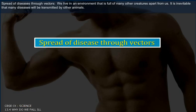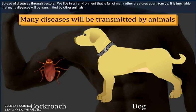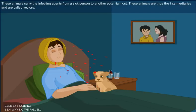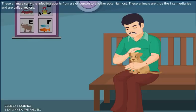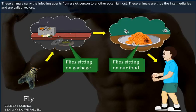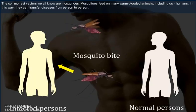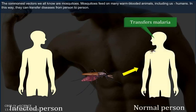Spread of disease through vectors: We live in an environment that is full of many other creatures apart from us. It is inevitable that many diseases will be transmitted by other animals. These animals carry the infecting agents from a sick person to another potential host, and are called vectors. The commonest vectors we all know are mosquitoes. Mosquitoes feed on many warm-blooded animals including us, and in this way they can transfer diseases from person to person.